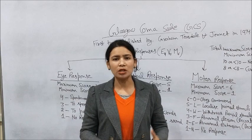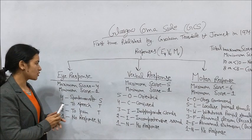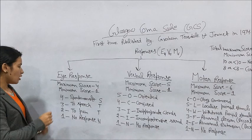First of all, I am going to tell you about eye response and its scoring. Eye response has a maximum scoring of four and a minimum scoring of one.